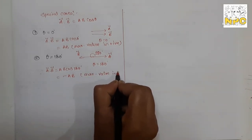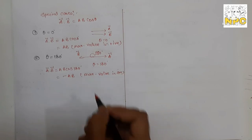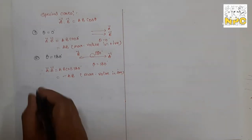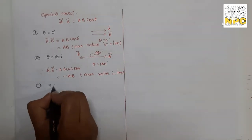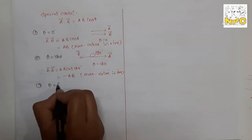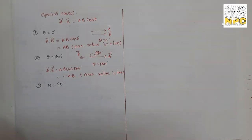Second case: theta equals 180 degrees, meaning the two vectors are anti-parallel. Then a dot b equals a·b·cos 180, and since cos 180 equals minus 1, the result is minus a·b — this is the maximum value in the negative direction.